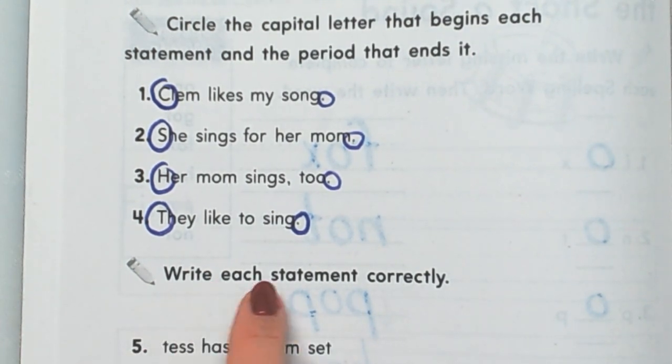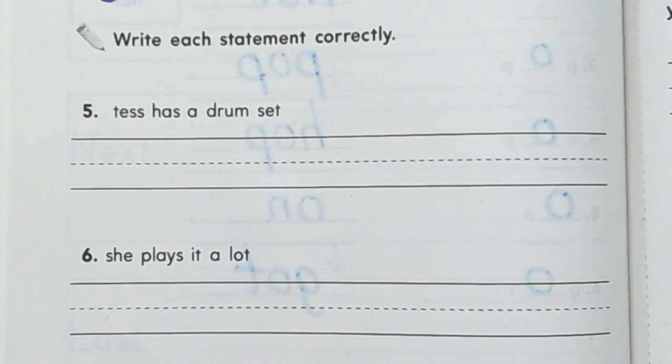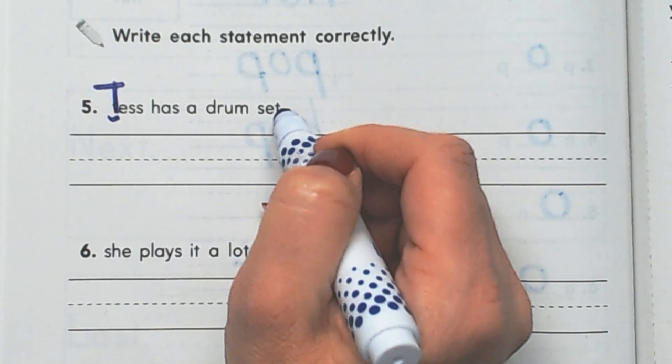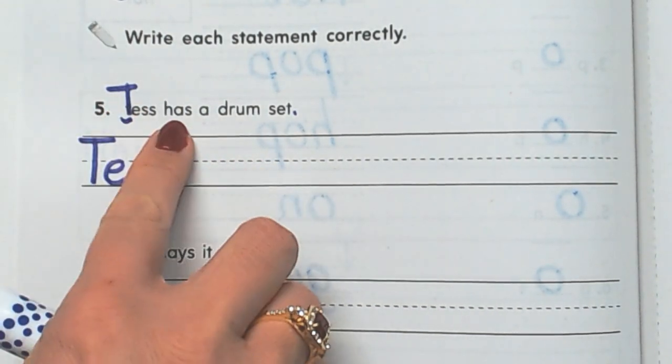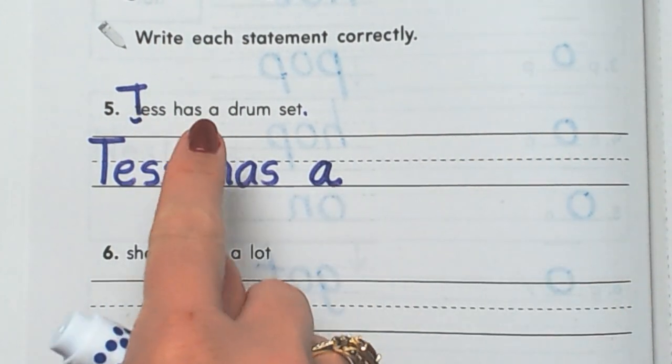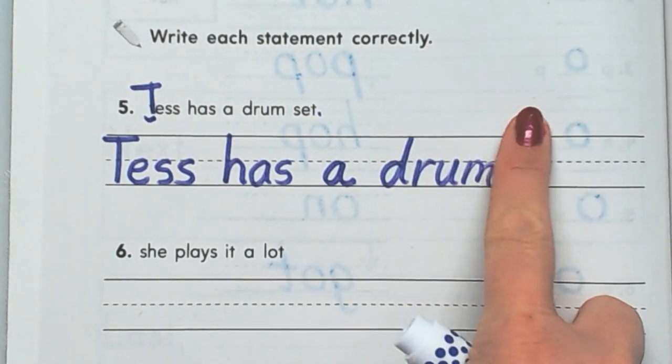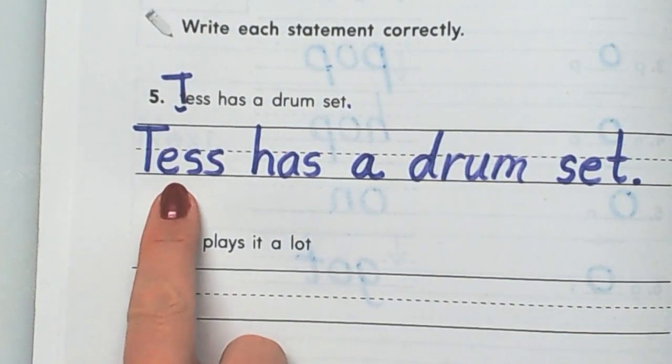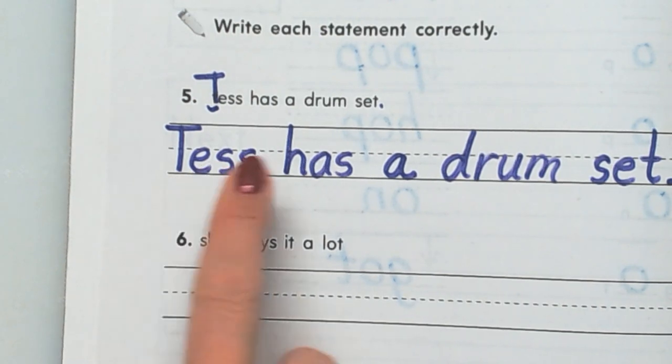Now it says write each statement correctly. So they give us two wrong statements. They're supposed to start with capital letters. They're supposed to end with periods, but they didn't. So we have to put the capital letter. So right here we're going to put a capital T, and then we're going to put a period at the end. Tess has a drum set. So we're going to write that. Tess, finger space. And then you write the word has. Finger space. And you're going to write the word a. Finger space. And you're going to write the word drum. Finger space. And you have to write the word set. And don't forget to stop the statement with a period. Tess has a drum set. Now it's a correct statement. It begins with a capital letter. It ends with a period.